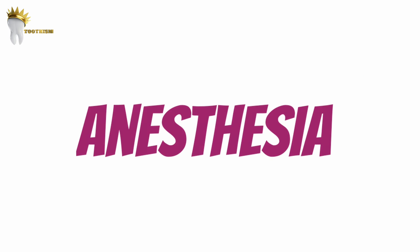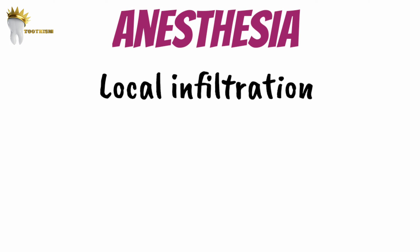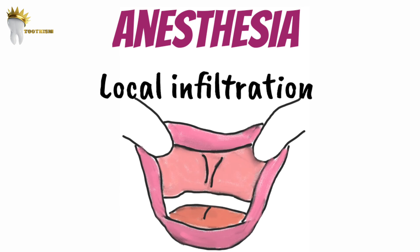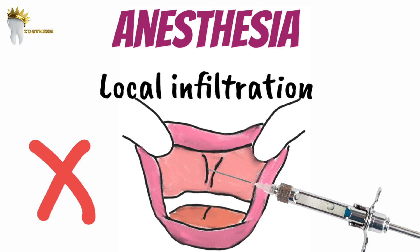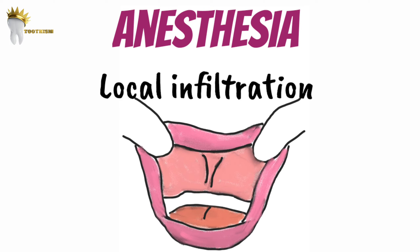First, we need anesthesia. For frenectomies, local infiltration is usually sufficient, but the local anesthetic should not be administered directly into the frenum because it can distort the anatomy of the frenum. We need to visualize the anatomy properly at the time of excision. A surgical assistant can evert the lip during the procedure.